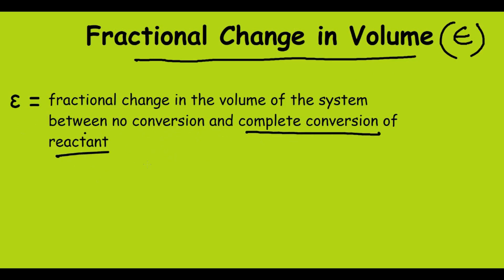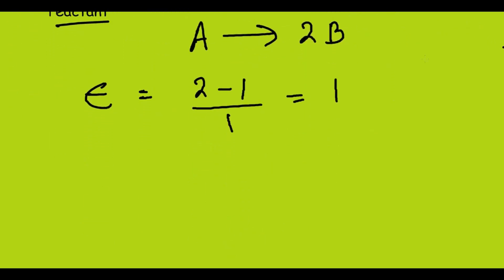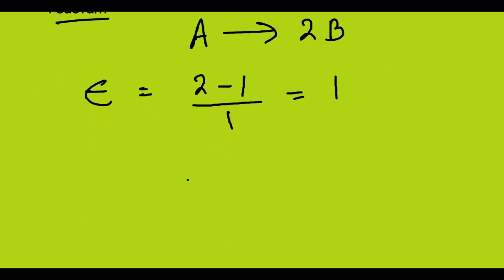To start with, consider the reaction A giving 2B. What will be the fractional change in volume, that is epsilon? To calculate epsilon, it is simple in this case: epsilon equals 2 minus 1 divided by 1, which is equal to 1. This is the simple case.